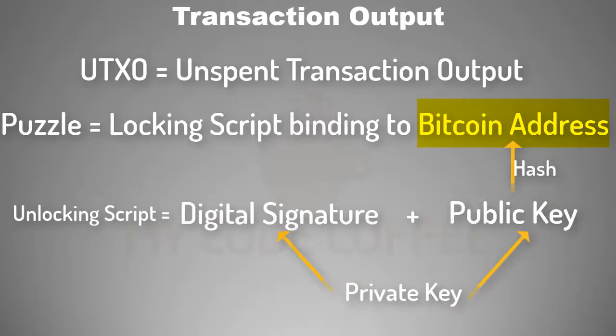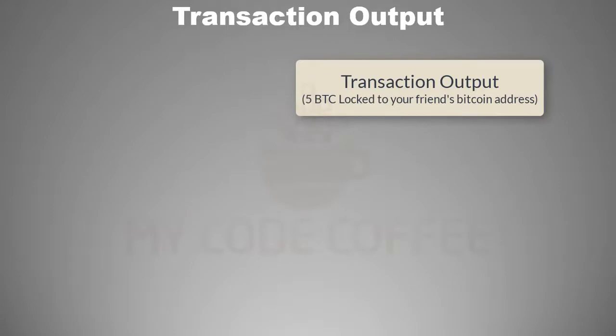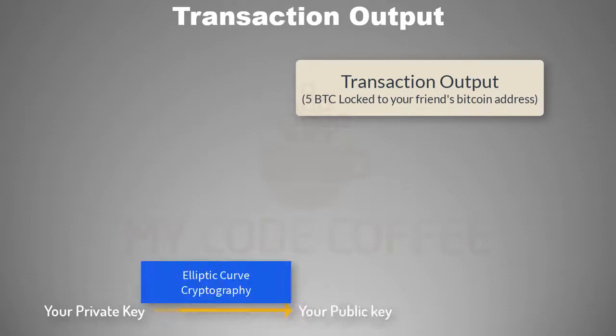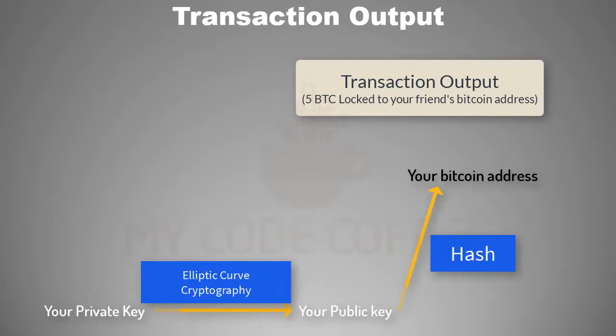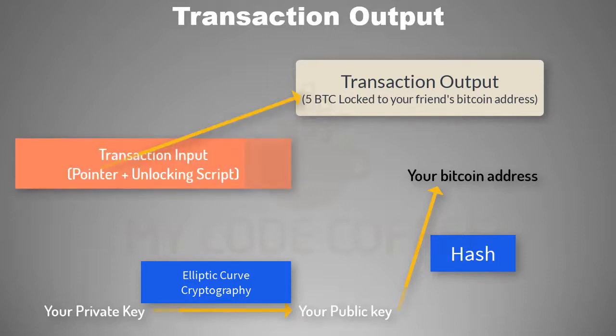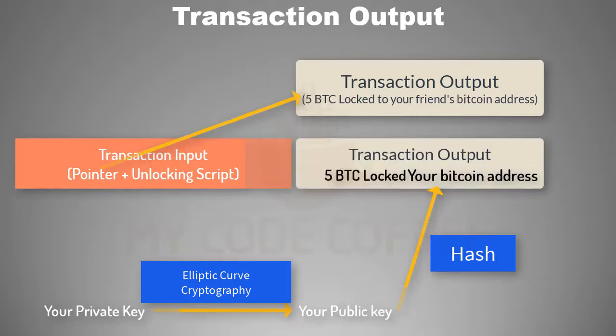Suppose your friend has five Bitcoin and wants to transfer it to you. The first step is that you give your Bitcoin address. Then your friend will spend the transaction output of five Bitcoin which he owns by creating another transaction output that has a locking script binding this Bitcoin to your Bitcoin address.